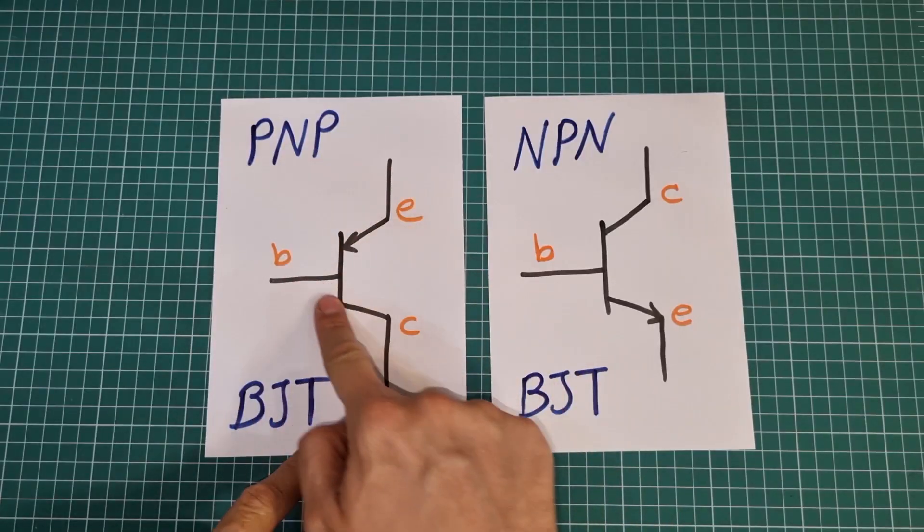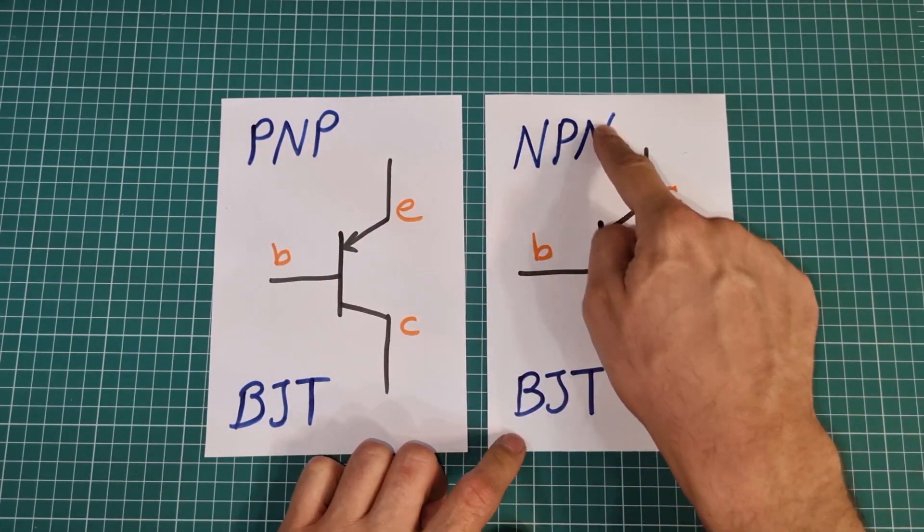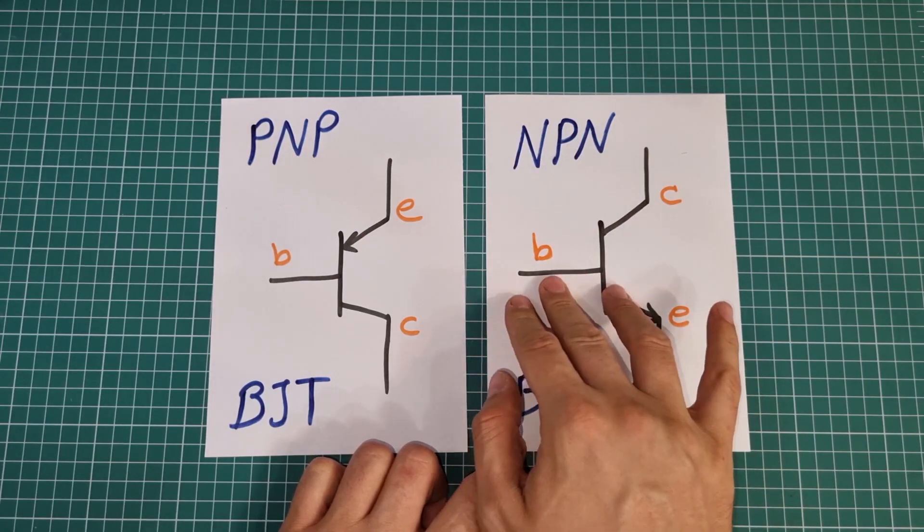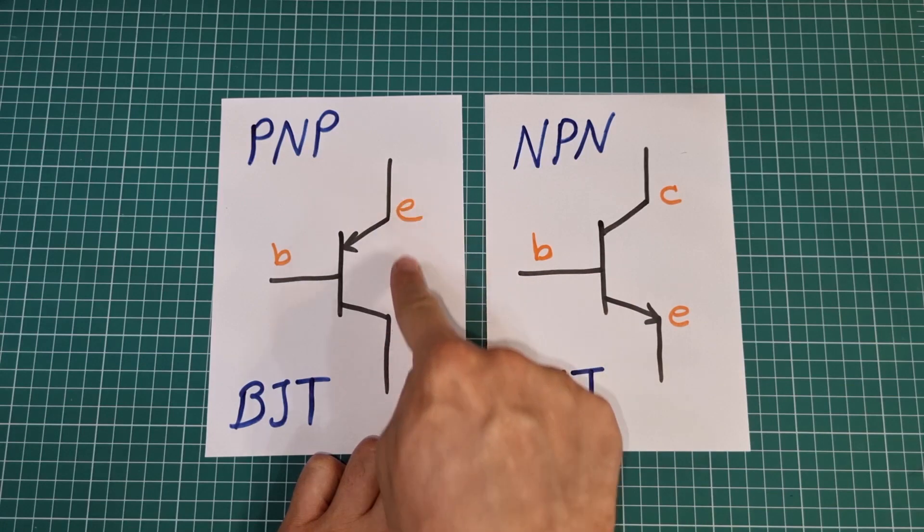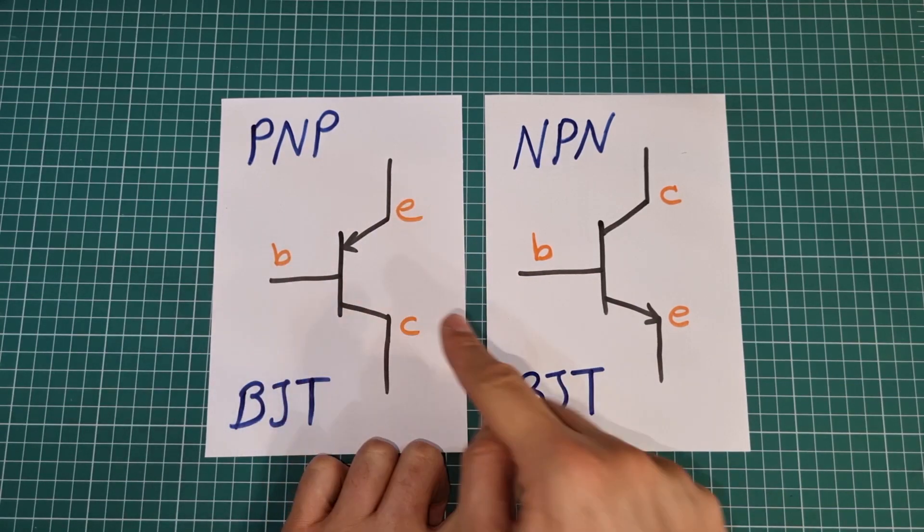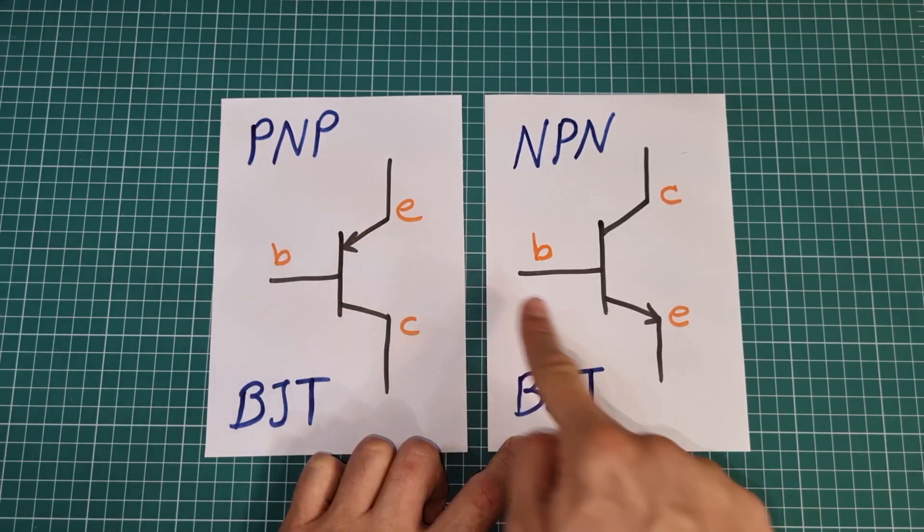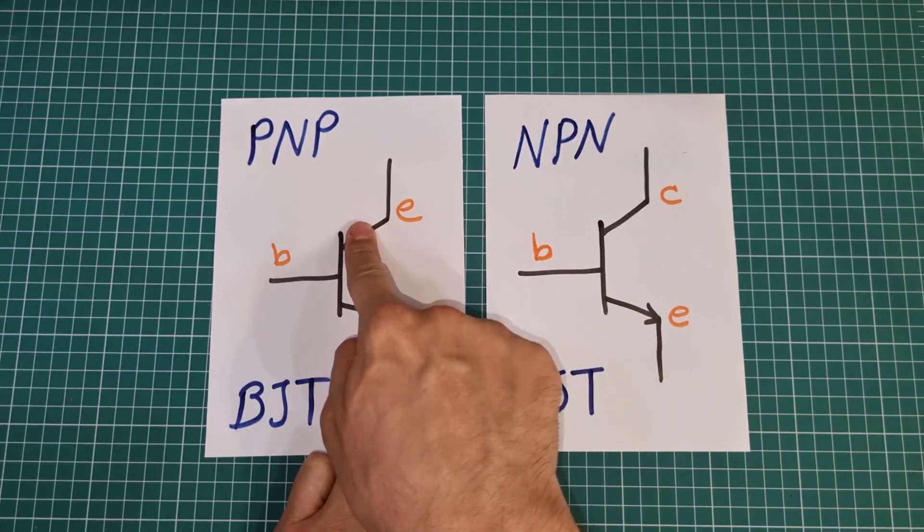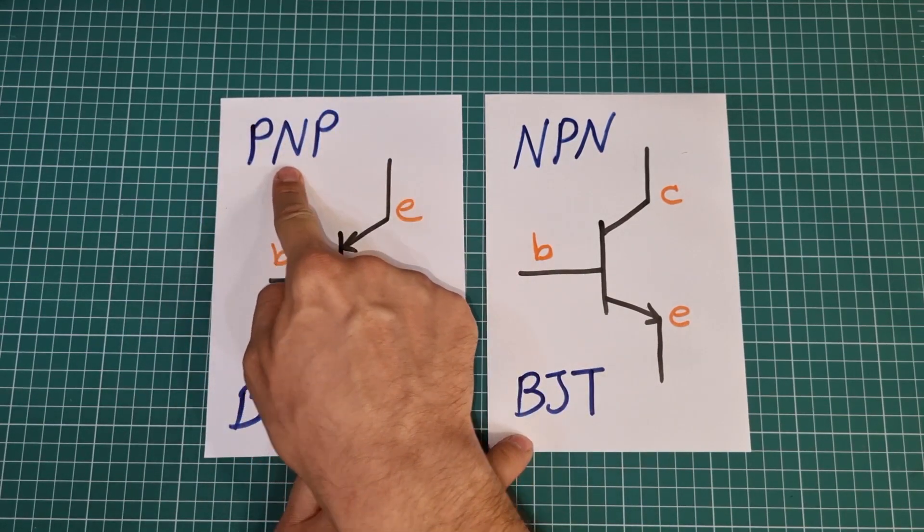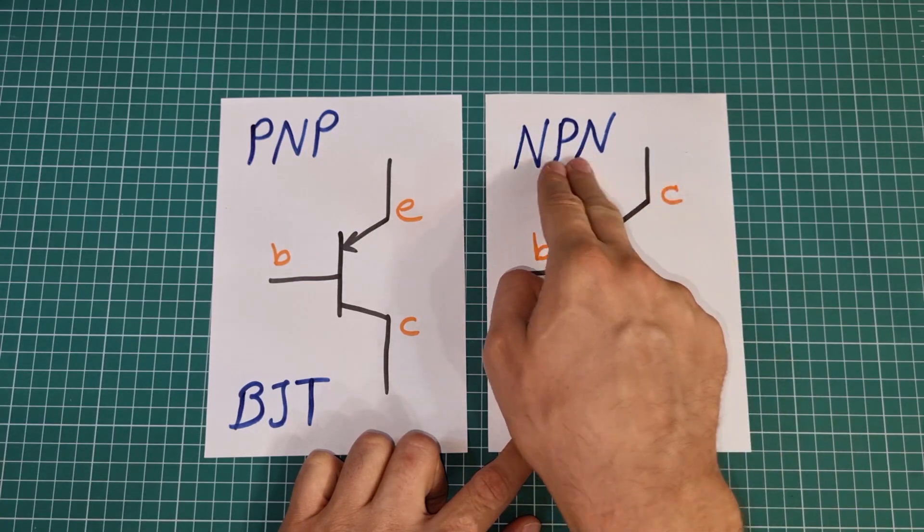This is a schematic symbol of PNP type BJT transistor, and this is for NPN type BJT. Both of them have three pins: emitter, collector and base. The arrow is always on the emitter pin, and direction of arrow shows BJT type. If arrow is inward, then it's a PNP type, and if arrow is outward, then it's an NPN type.